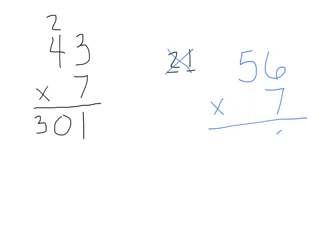So I'm going to put the 2 ones in my answer area, and the 4 tens up in my trading area. Next, I go 7 groups of 5 tens. 7 groups of 5 tens is worth 35 tens plus, can't forget about the 4 tens up here. So 35 tens plus the 4 tens gives us 39 tens.